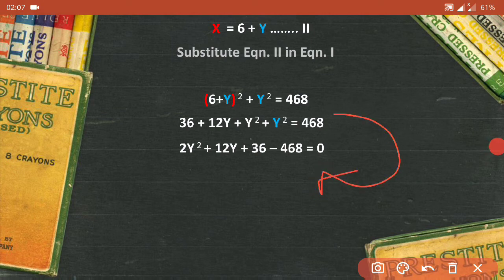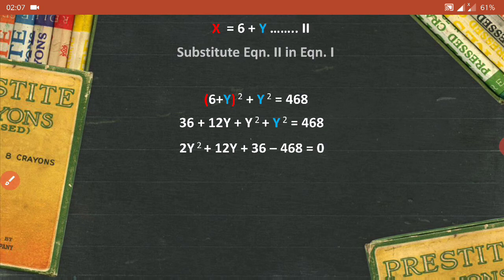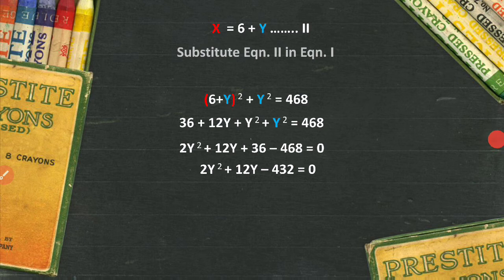So 2y² plus 12y plus 36 minus 468 equals 0. This would become 2y² plus 12y minus 432. Now this is a quadratic equation again. 2 is multiplied to all the equation. It's a multiple of 2, right, all the numbers. So I can just divide it by 2 to reduce that equation so that it becomes a little more simpler.